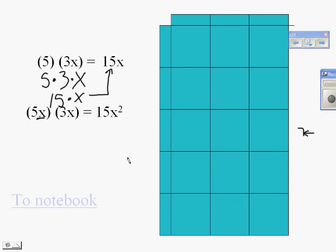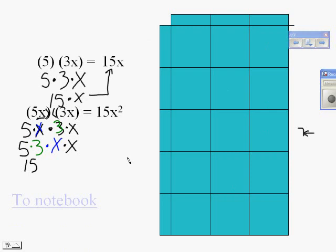Looking at it mathematically: 5 times x is what's indicated by the first term, then we have parentheses next to each other meaning multiplication, and 3 right next to x means 3 times x. So 5 times 3 is 15, times x times x, giving 15x².